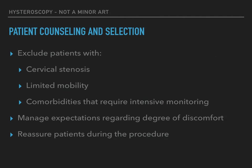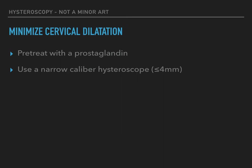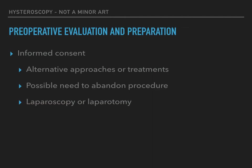In order to ensure successful outpatient hysteroscopy, one should exclude patients with cervical stenosis, limited mobility that impedes positioning, or comorbidities that require intensive monitoring or who cannot tolerate the procedure with a local anesthetic. It is also important to provide anticipatory guidance about the degree and duration of discomfort. Verbal reassurance during the procedure is also helpful. Outpatient hysteroscopy should be brief — only diagnostic or minor operative procedures — and should be done with minimal intraoperative pain. Patients may benefit from pre-treatment with prostaglandin the night before the procedure, and narrow caliber hysteroscopes of 4 mm or less should be used.